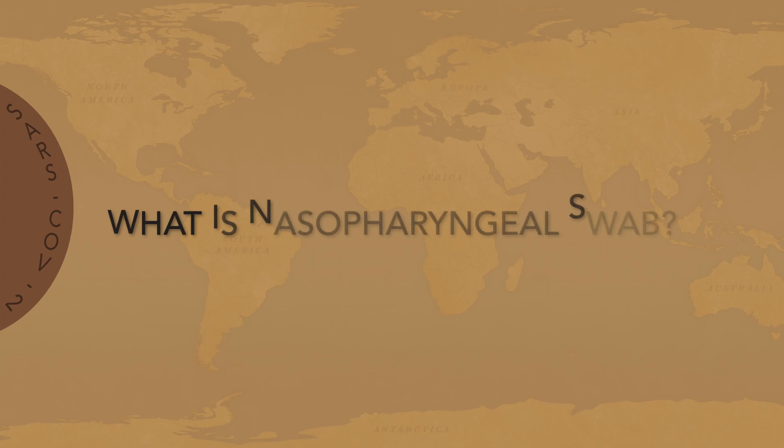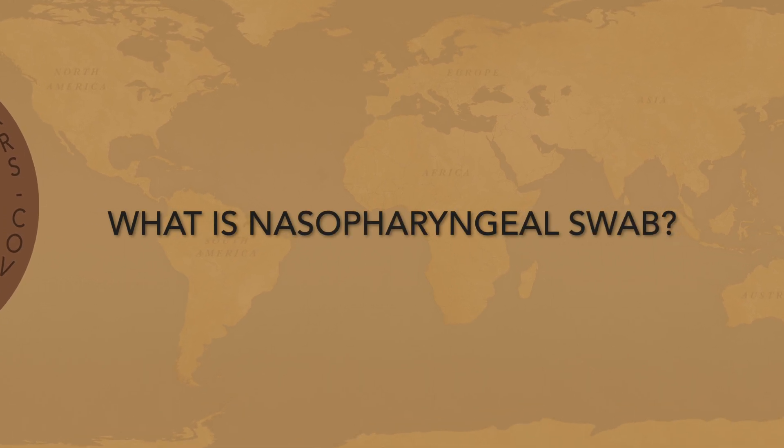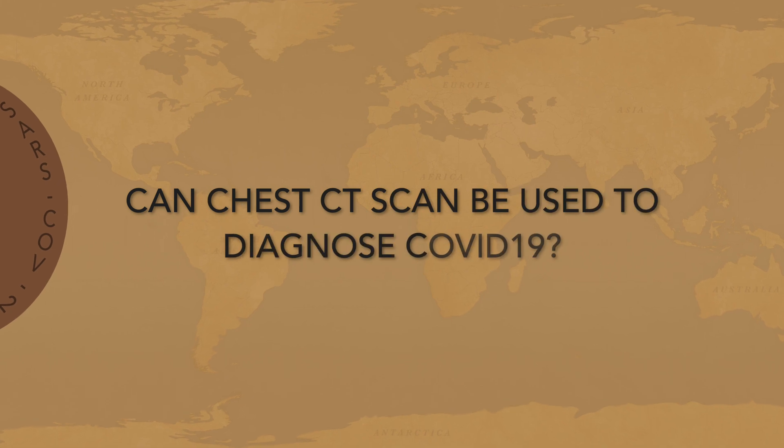COVID-19 is diagnosed by taking a swab from the nasopharynx or sputum and lab testing by real-time reverse transcription polymerase chain reaction (RT-PCR). A swab is inserted into the nostril, moved into the nasopharynx, and secretions are collected. A chest CT scan may also be used to diagnose the disease, but is recommended only for patients with high clinical suspicion.